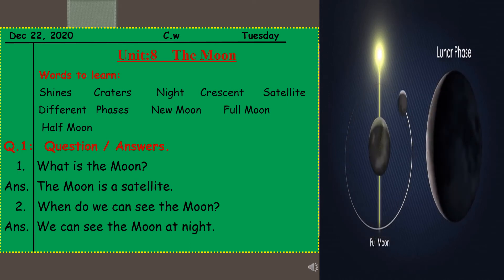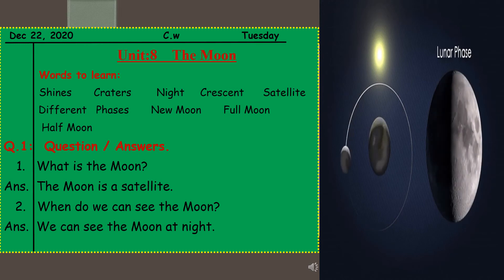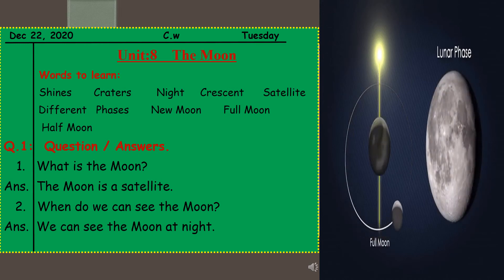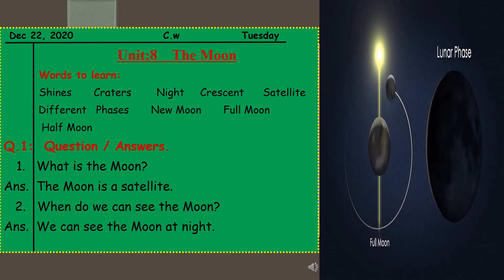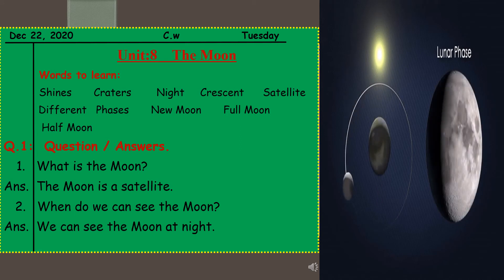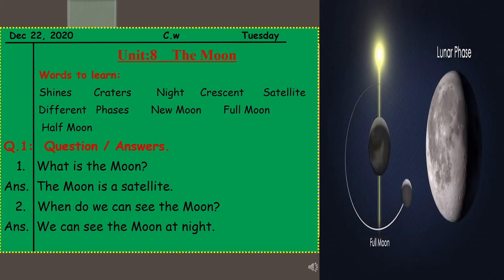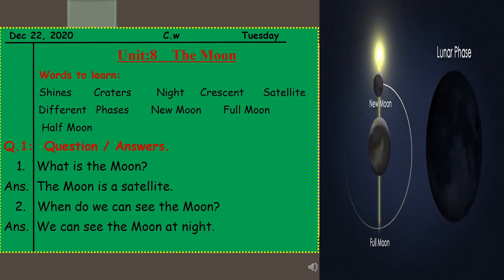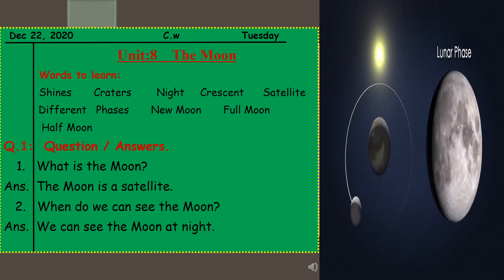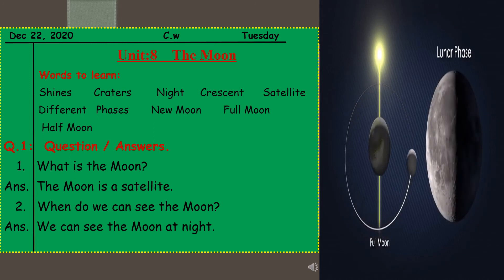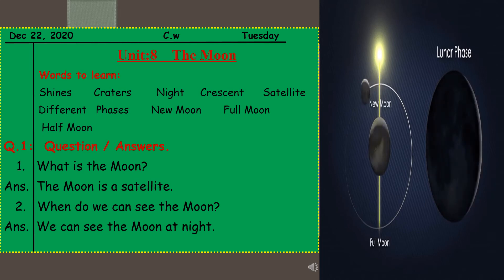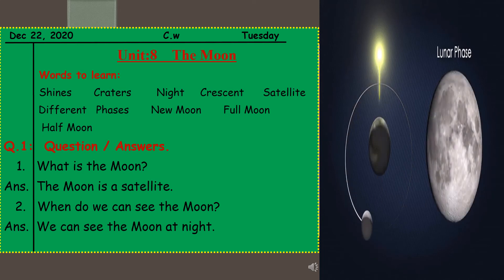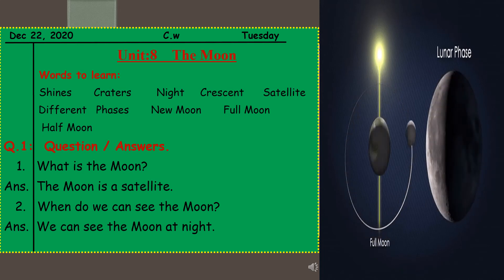So students, these are the words you have to learn, the spelling of these words, as you are going to use these words in your question answers, fill in the blanks, true false, and choose the correct answers. So you have to learn by heart all the spellings of these words and you have to write these words in your science notebook also, okay.